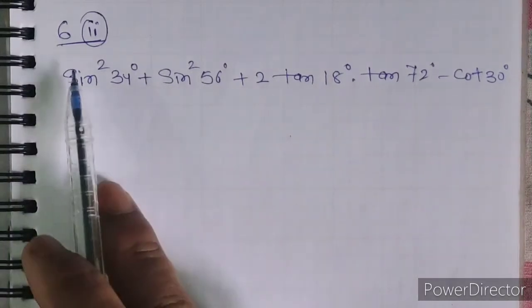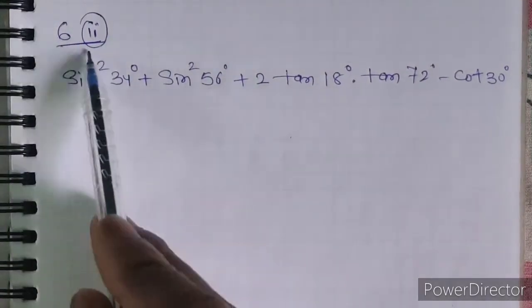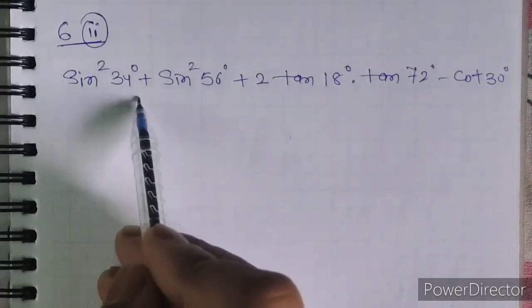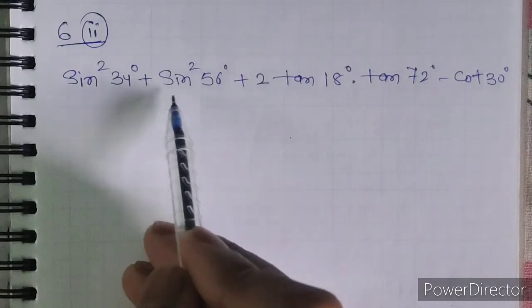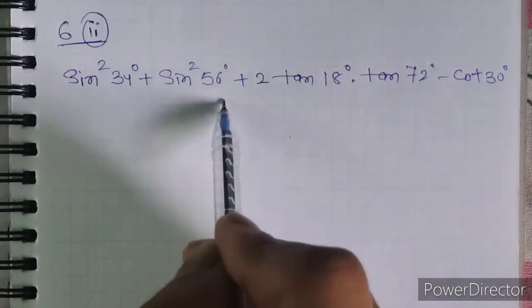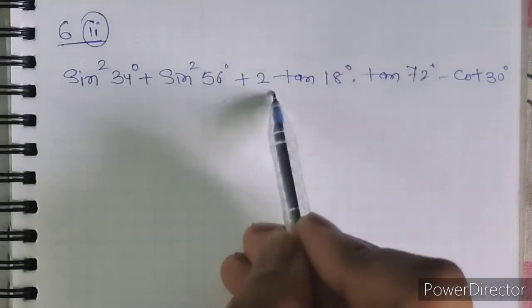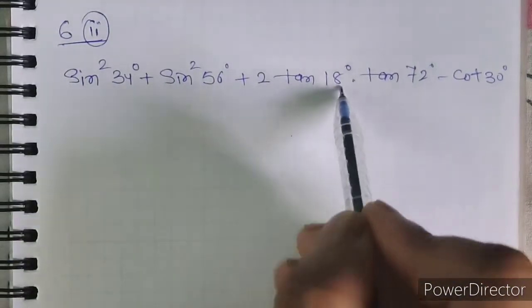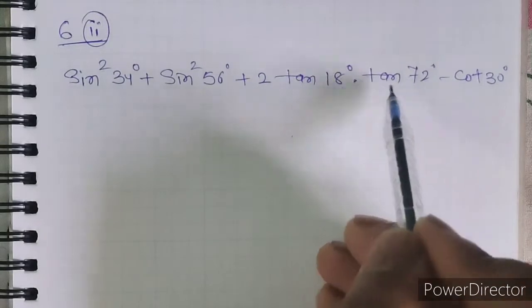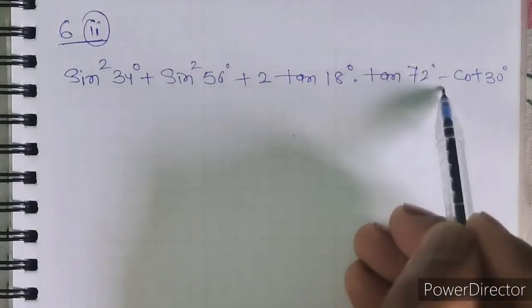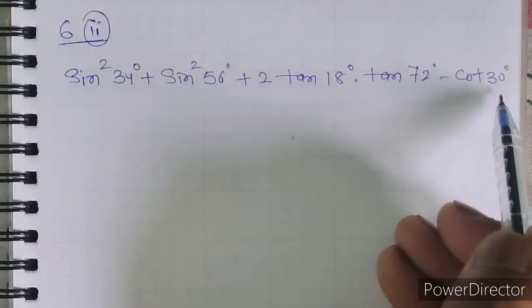The next question, 6b, is: sin square 34 degrees plus sin square 56 degrees plus 2 times tan 18 degrees into tan 72 degrees minus cos square 30 degrees.